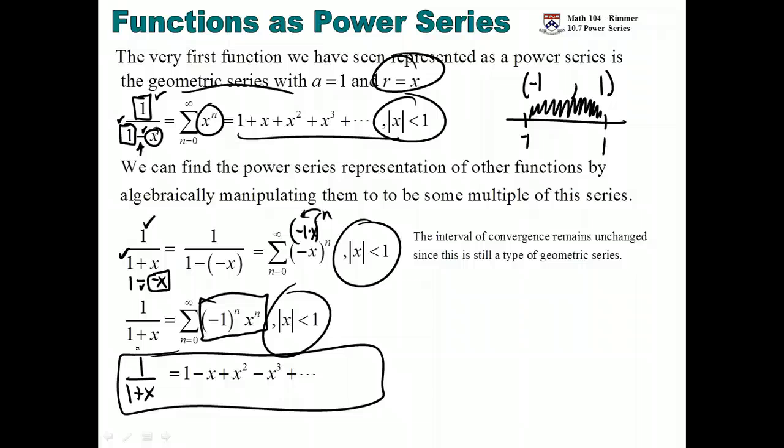So power series and Taylor series is what the rest of the class is about, basically. The first section was just sequences, just a list of numbers. Section 2 through 10.6 was just looking at tests and seeing if it converges or diverges. And now we're looking at power series and Taylor series. That's what the last part of this chapter is about. Questions?